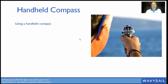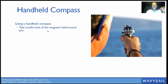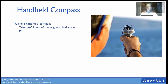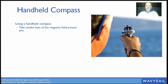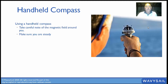A couple of things to note: take careful note of the magnetic field around you — you don't have a deviation card. Stand well clear of anything that could cause magnetic interference. Don't stand on top of the electrics box, switchboard, or engine. Get yourself nice and clear of everything so you have no deviation. Make sure you're steady — trying to get a decent reading while bouncing around is next to impossible. Take multiple readings.